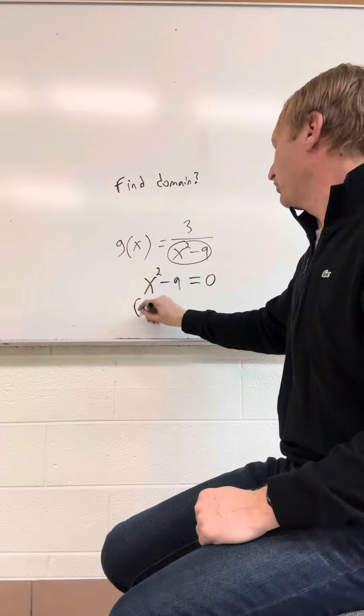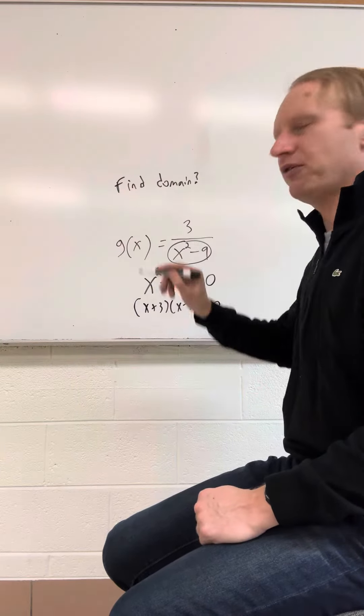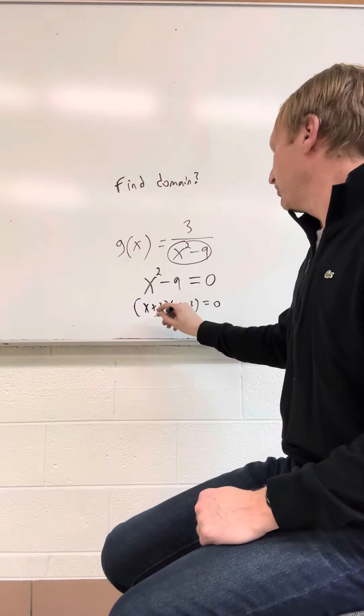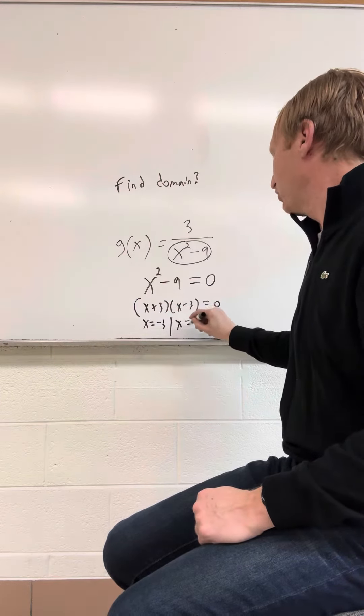So x squared minus 9 is like x plus 3, x minus 3, right? Difference of perfect squares. And this is going to be x equals negative 3 and x equals 3.